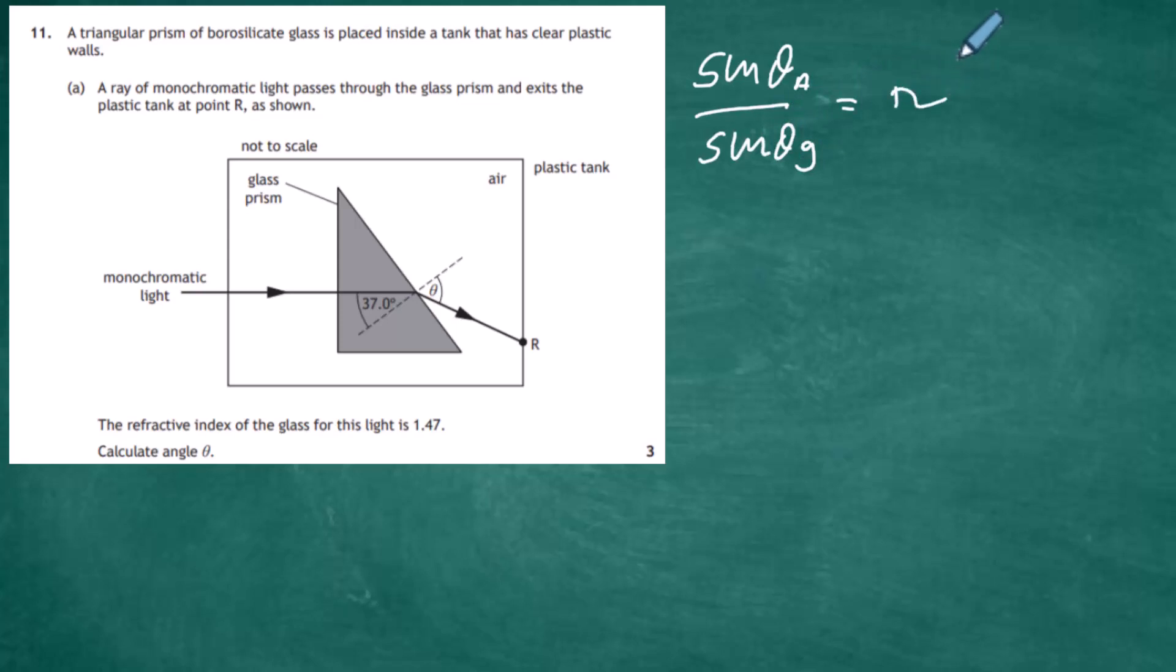That's our basic Snell's law equation. Now we've got to identify what's sine theta in air and what's sine theta in the glass. You can see that the ray of light is approaching in the glass and is leaving the glass, but remember in optics we can reverse those rays. We can have a ray of light coming from R and striking a boundary at the normal here and being refracted in that direction. So sine theta will become just simply sine theta, and sine theta in the glass will become 37 degrees.